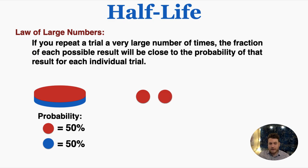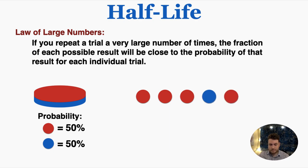I could say, oh, I've had two reds in a row, so maybe the odds are higher that the next one will be blue, but that's not actually true. Every single time we flip it, it's 50-50, so we're just as likely to get red on the next time as any previous times. So it's totally random, and on an individual level, we can't predict what the coin will be for any one trial.